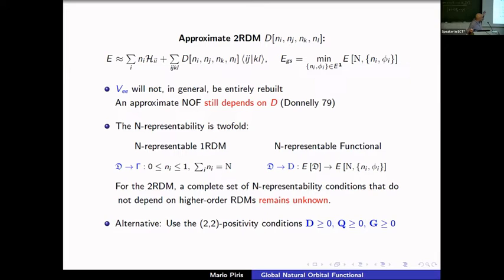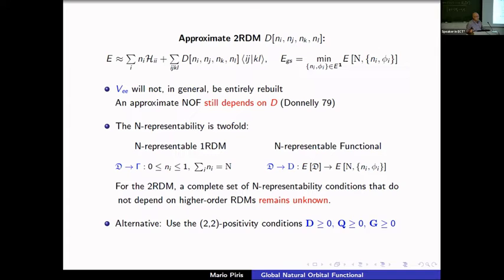When you reconstruct the two-particle density matrix this way, you are not directly reconstructing the electron-electron energy as a functional of the one-particle matrix alone. This was already pointed out by Löwdin in the 1950s and in a very good paper by Donnelly in 1979: these approximations still depend on the two-particle density matrix. The best you can obtain is some energy expression behind which there may be an approximate wave function — as is the case for PNOF5.